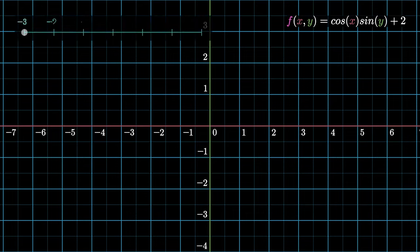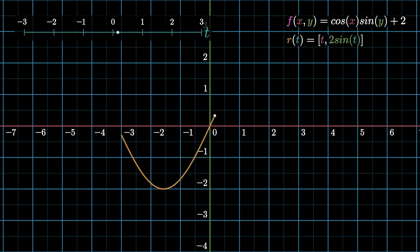Our curve here is defined by the parametric function r of t equals t comma 2 sine of t for values of t ranging in between negative 3 and 3.